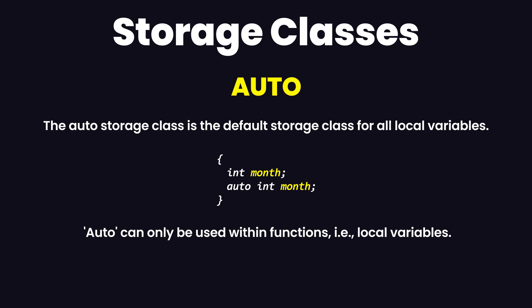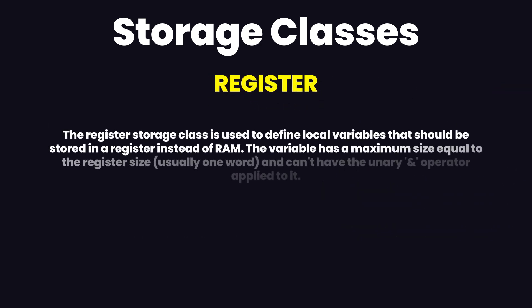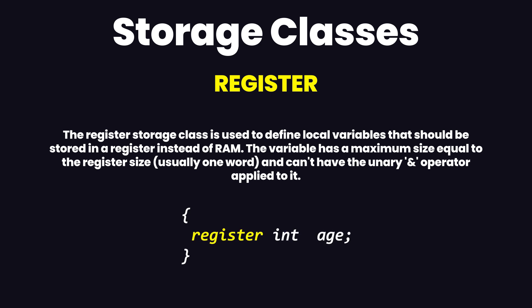Whenever you create a variable, the auto storage class is automatically preceded with the declaration of that variable. The register storage class is used to define local variables that should be stored in a register instead of RAM. This means the variable has a maximum size equal to the register size and cannot have the unary operator — the '&' operator — applied to it, because it does not have a memory location.